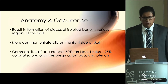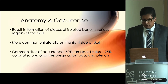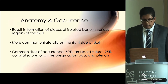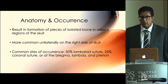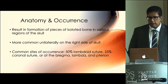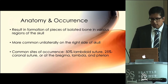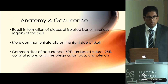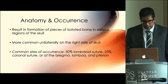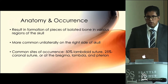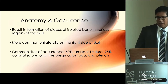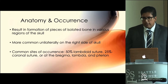The end result is the formation of isolated pieces of bone in various regions of the skull. They're most commonly located within the bony sutures rather than the fontanelles. Of the sutures, around 50% occur within the lambdoid suture, 25% within the coronal suture, and the remaining occur in other regions such as the bregma, the lambda, and the pterion. They're usually unilateral rather than bilateral, and for some reason, they're more common on the right side than the left.